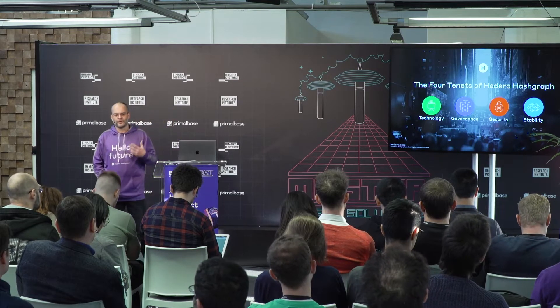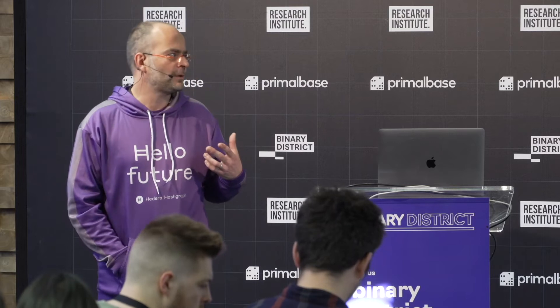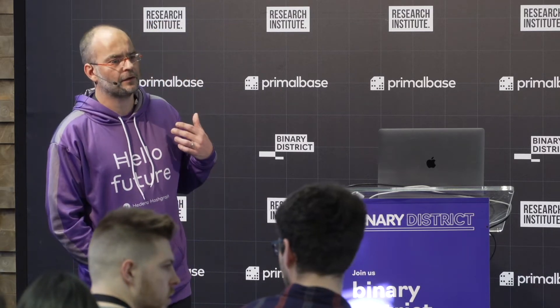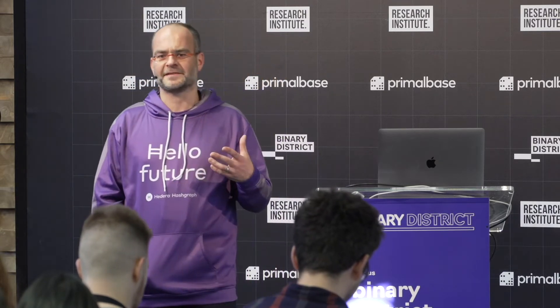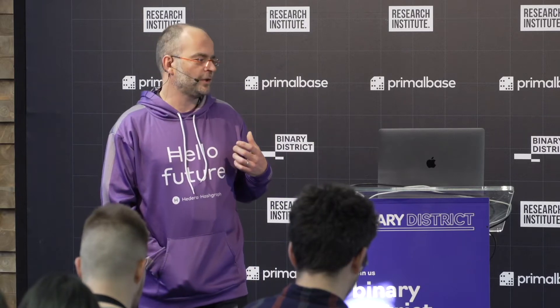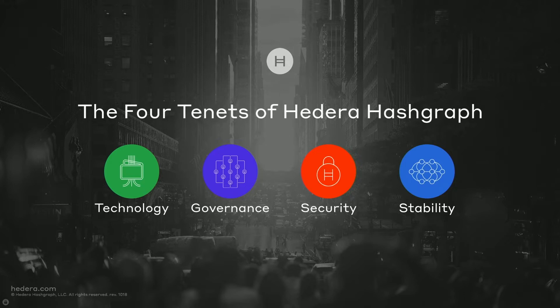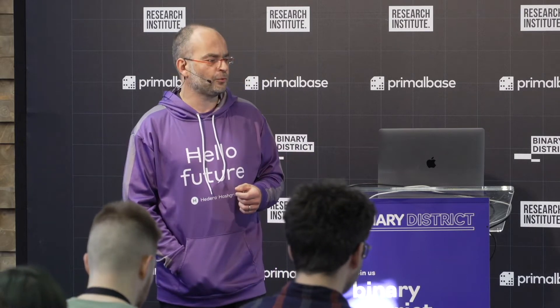The four things we're trying to address with Hedera Hashgraph are: technology, which I'll talk about today; governance, which I won't cover, but we look to implement truly world-class governance on top of the public network suitable for deployment at scale; security — we believe the public network needs to be as secure as it can possibly be; and stability — if anybody is going to develop and deploy applications on the network, the lack of forking or splitting in the future is critical.